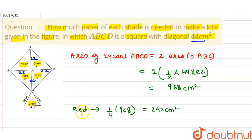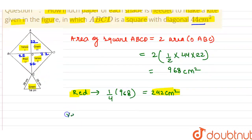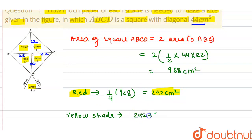Now for the yellow shade: yellow one and yellow two each have area 242 cm². So we add two times 242, which gives 484 cm². This is the yellow shade region.